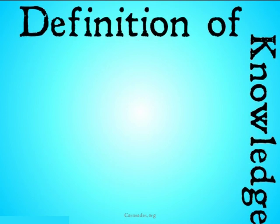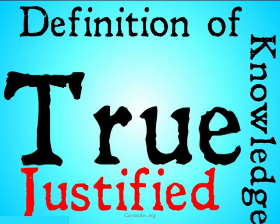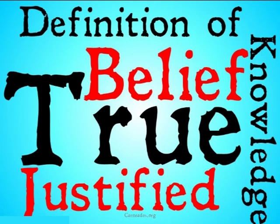This is a problem for the very definition of knowledge. Knowledge is usually defined as justified true belief. Instead of claiming that these are not necessary for knowledge — that you could have knowledge without it being justified, without it being true, without you believing it — Gettier is going to claim that having justified true belief is not sufficient for knowledge, that you need something more.